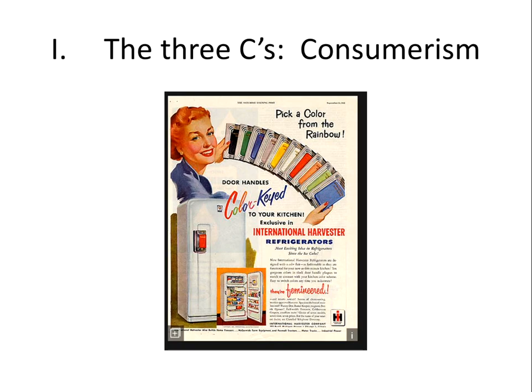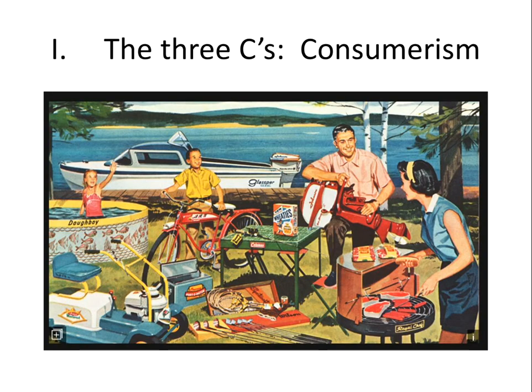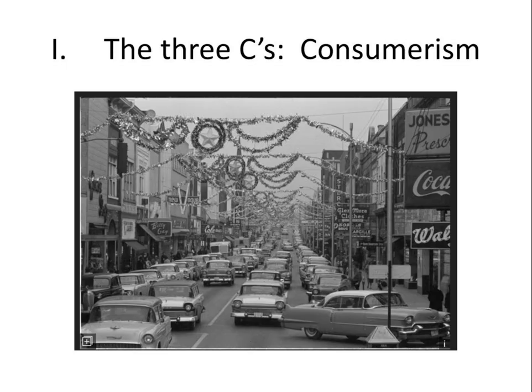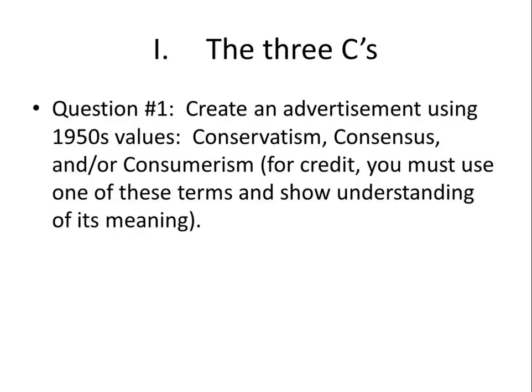The third C is consumerism — the idea that you buy stuff to be American. Just like the Victorian era, we're going to show we're better than communists by buying things. Americans are buying, buying, buying — refrigerators in different colors, camping gear, dresses and jewelry, Christmas shopping. Your assignment is to create an advertisement using 1950s values: conservatism, consensus, or consumerism. You must use one of these terms and show understanding — don't just make a regular ad, show that you know 1950s values.